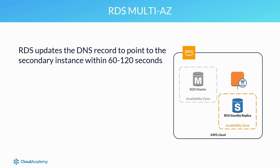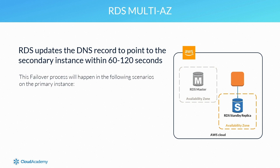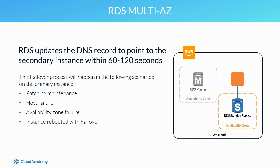This process can typically take between 60 and 120 seconds. The length of time is very dependent on the size of the database, its transactions, and the activity of the database at the time of failover. This automatic changeover enables you to continue using the database without the need of an engineer making any changes. The failover process will happen in the following scenarios: if patching maintenance is being performed on the primary instance, if the primary database has a host failure, if the availability zone of the primary database fails, if the primary instance was rebooted with failover, or if the database instance class on the primary database is modified.